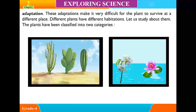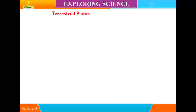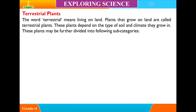These adaptations make it very difficult for the plant to survive at a different place. Different plants have different habitats. The plants have been classified into two categories: Terrestrial Plants and Aquatic Plants. The word terrestrial means living on land. Plants that grow on land are called terrestrial plants. These plants depend on the type of soil and climate they grow in. These plants may be further divided into subcategories.